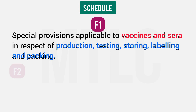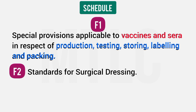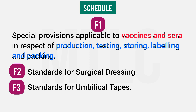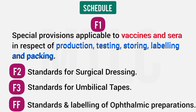Schedule F2 covers surgical dressings such as tape, gauze, and bandage. Schedule F3 covers umbilical tapes. Schedule FF covers ophthalmic preparations. So F, F1, F2, F3, and FF form a group.